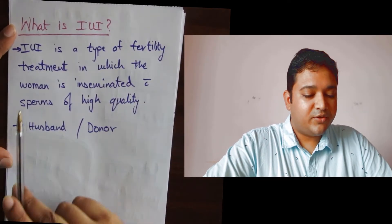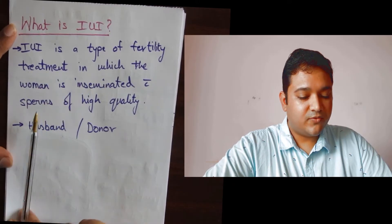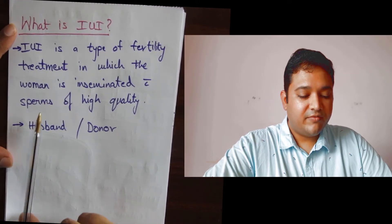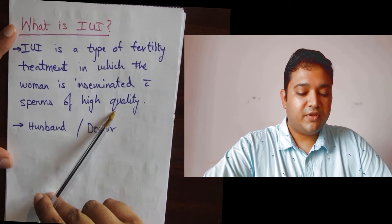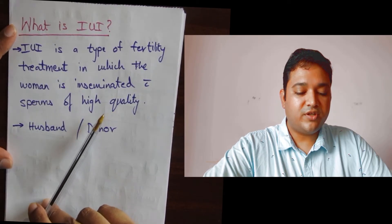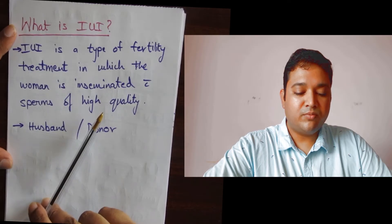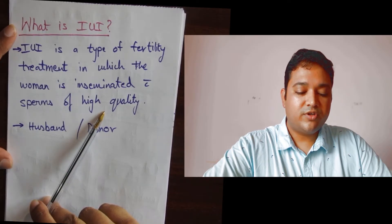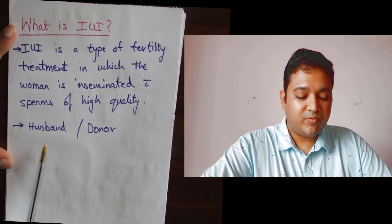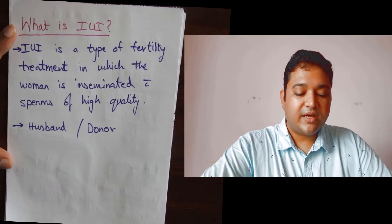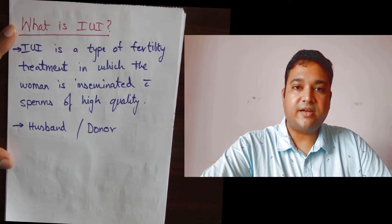What is IUI? IUI is a type of fertility treatment in which the woman is inseminated with sperms of high quality. By high quality, we mean that the sperms are usually of high sperm count, sperm motility, and very good sperm morphology. The sperms may be the husband's sperm or donor sperms as the case may be, and as the couple has decided.